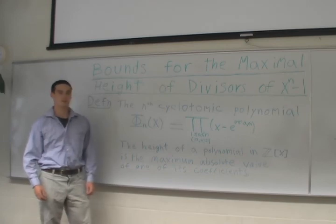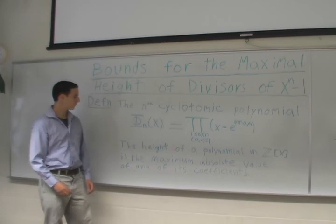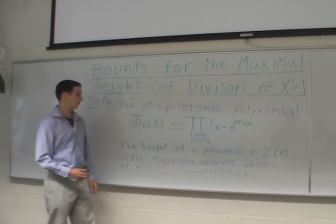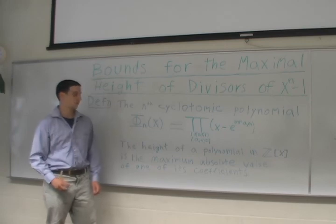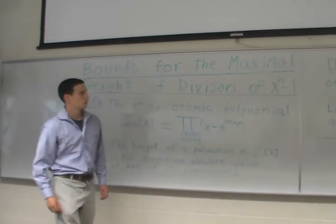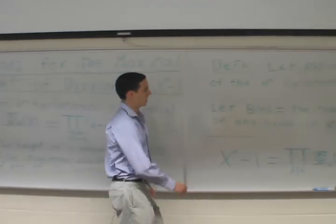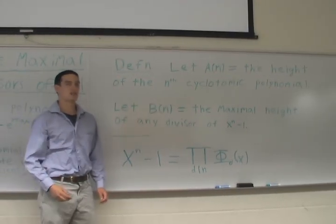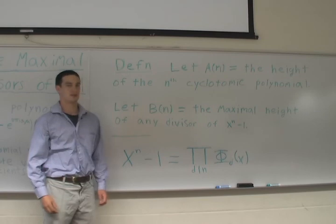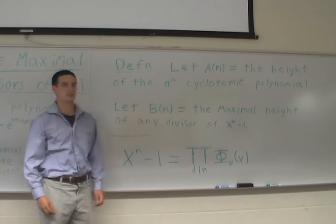Once we know that these coefficients are integers, we'd like to know how large they are. We say that the height of a polynomial with integer coefficients is the maximum absolute value of one of its coefficients. Let a of n be equal to the height of the n-th cyclotomic polynomial. This function a of n has been studied for over 100 years and is the subject of several recent papers.